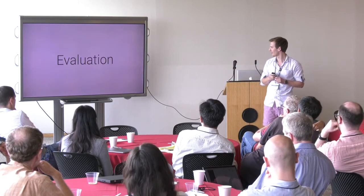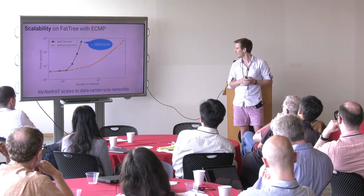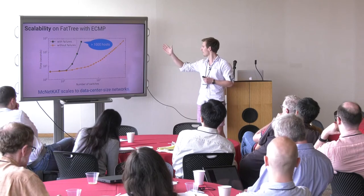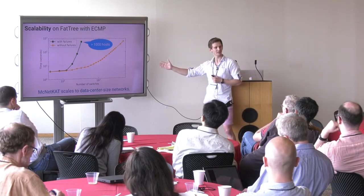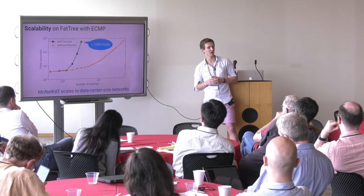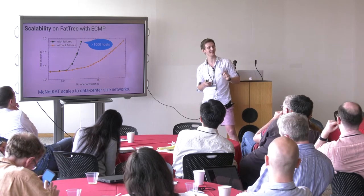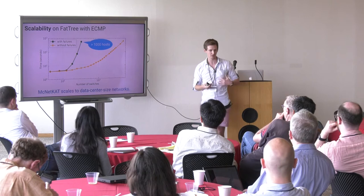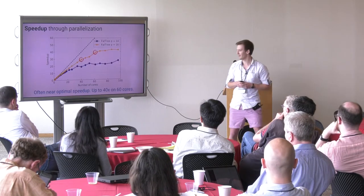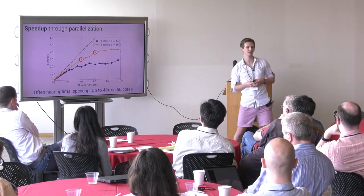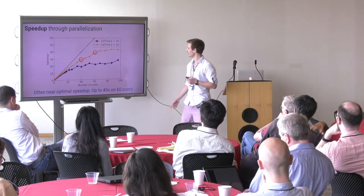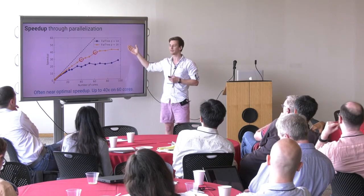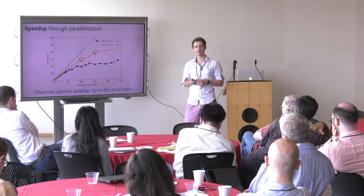Let me show you briefly how this performs in practice. We applied the tool to a data center topology called FatTree — a very common data center topology with an ECMP configuration. We can see that this scales to very large networks. There is some cost to modeling failures — we currently have an exponential in there that's a weakness in the implementation that could be improved — but we can still handle networks with more than a thousand hosts. Additionally, this is very amenable to parallelization. Running on 40 cores in parallel, we get almost optimal speedup — around 30x.